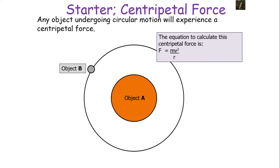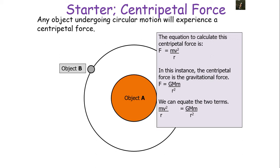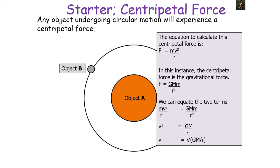Any object undergoing circular motion experiences a centripetal force, given by F = mv²/r. In this instance, the centripetal force — the resultant force towards the centre of the circle — is the gravitational force, which equals F = GMm/r². We can equate the two terms, cancel the small m's common on both sides, and cancel one r from each side. This leaves us with v² = GM/r, or v = √(GM/r).